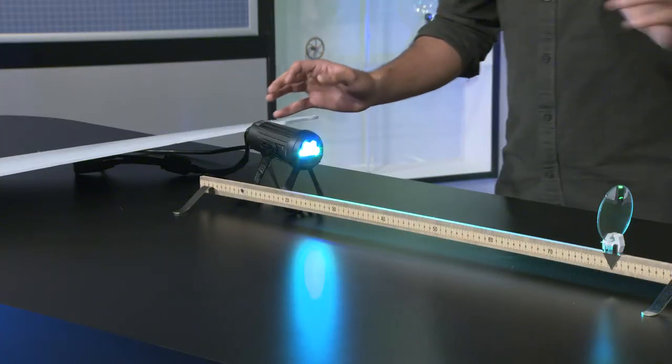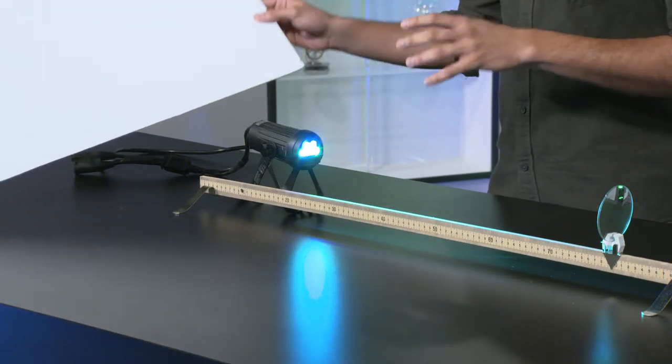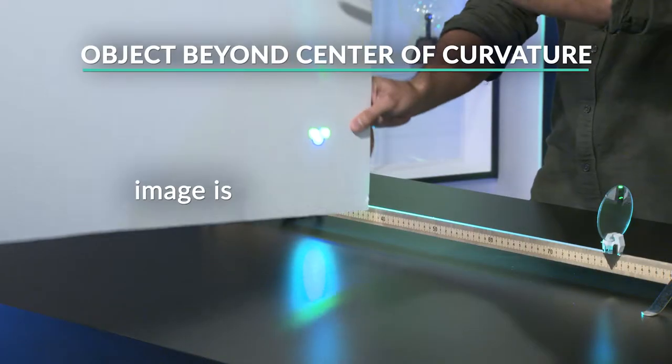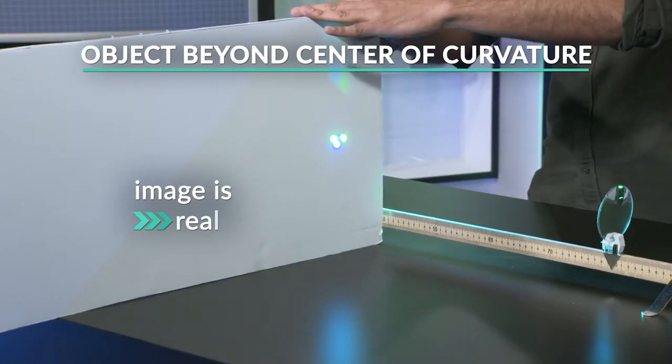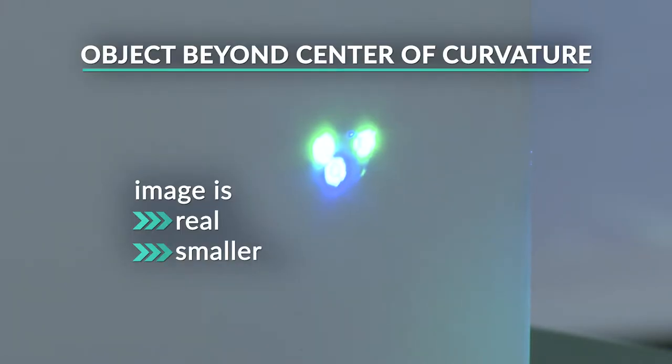You can make a few different kinds of real images with spherical mirrors. The image formed will depend on the distance between the object and the mirror. I have an LED light, a concave mirror, and a surface to project the image on. The LED creates green and blue light, and the blue light comes from the top half of the light source. Right now the LED is beyond the mirror's center of curvature. We see a real image — and notice it's smaller, and the blue light is at the bottom, which means the image is upside down, or inverted.